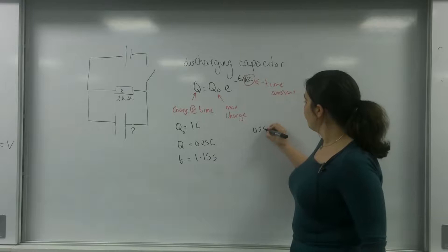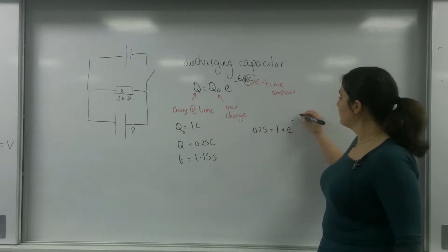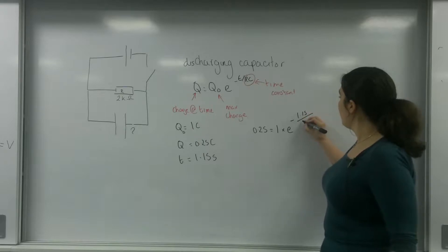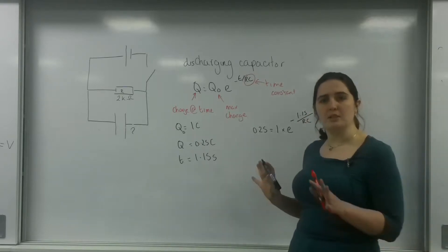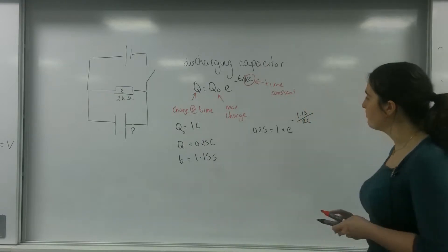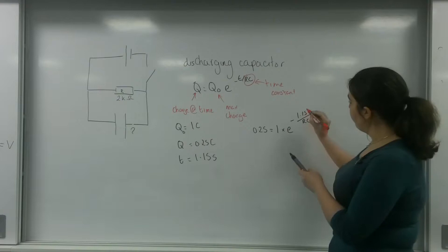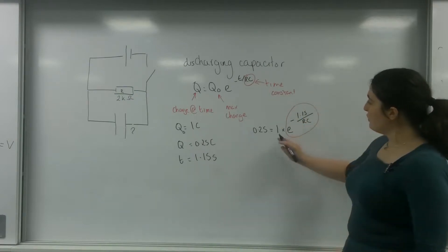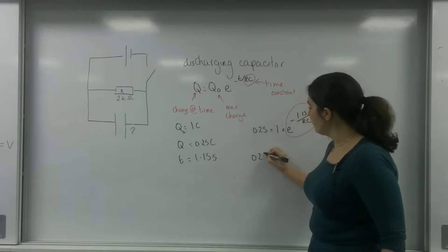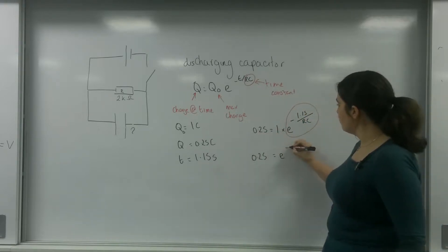Let's put in the information I know. I know that 0.25 equals 1 times E to the minus 1.15 over RC — I'm going to leave RC together for now because it's much easier to handle at the end. The first thing I must do is get the exponential part on its own before I do anything with natural logarithms. Dividing both sides gives 0.25 equals E to the minus 1.15 over RC.